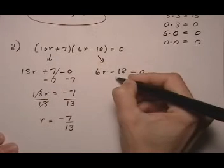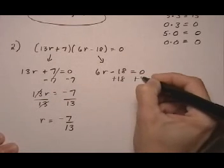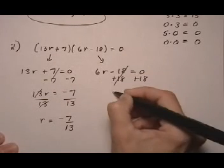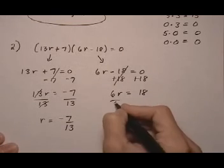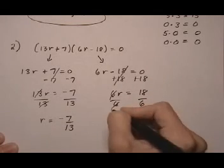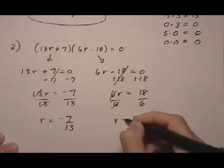Same idea for the second one. We go ahead and solve it. Add eighteen on both sides. Six R equals 18. Divide by six. R equals three.